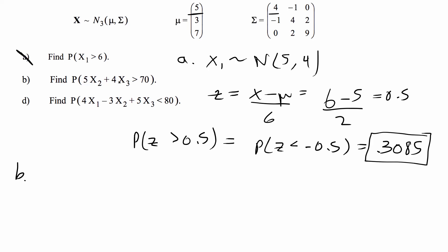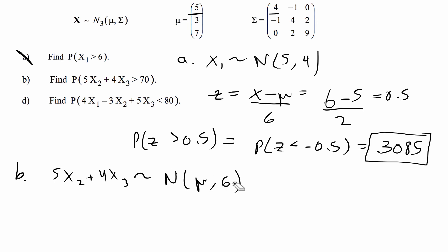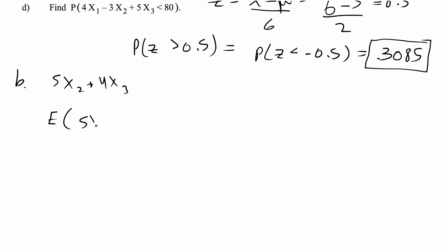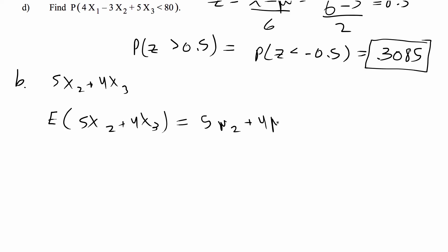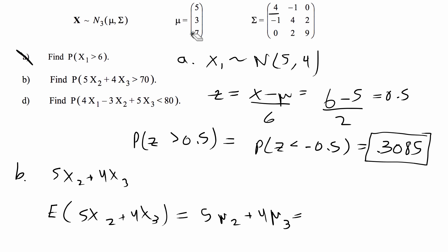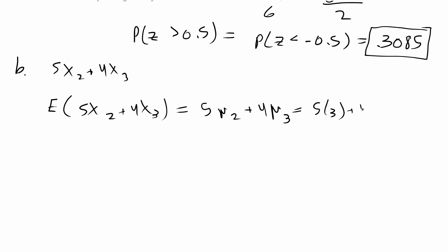Part b is a linear transformation of two normally distributed random variables. There's a theorem that says any linear combination of normally distributed variables is also normally distributed, so 5x2 plus 4x3 is normally distributed. We have to find mu and sigma. For mu, we find the expected value: 5 times the expected value of x2 plus 4 times the expected value of x3, which is 5 times 3 plus 4 times 7, giving us mu equals 43.